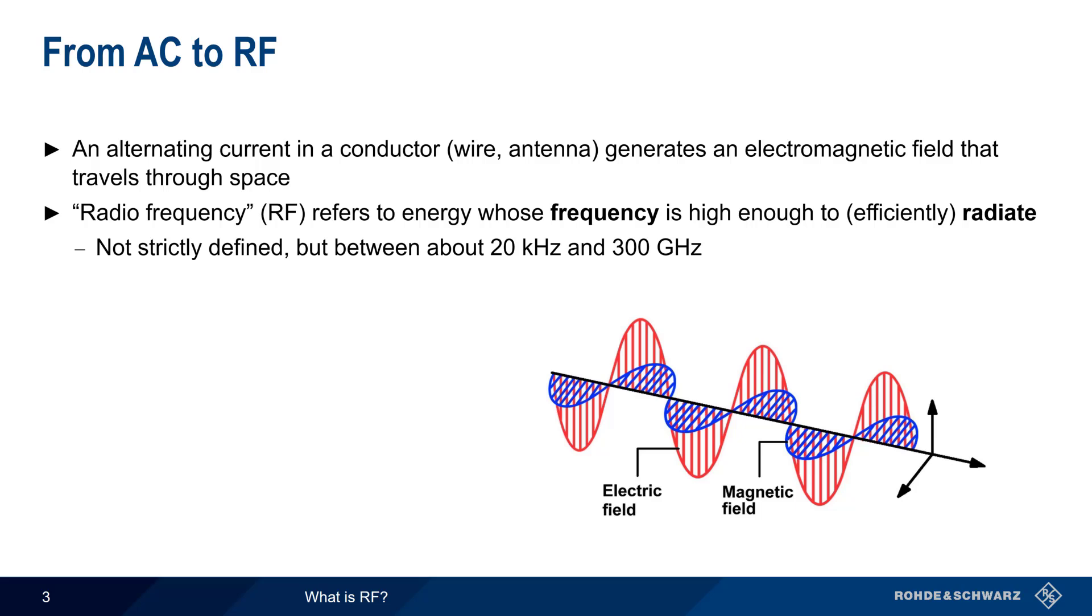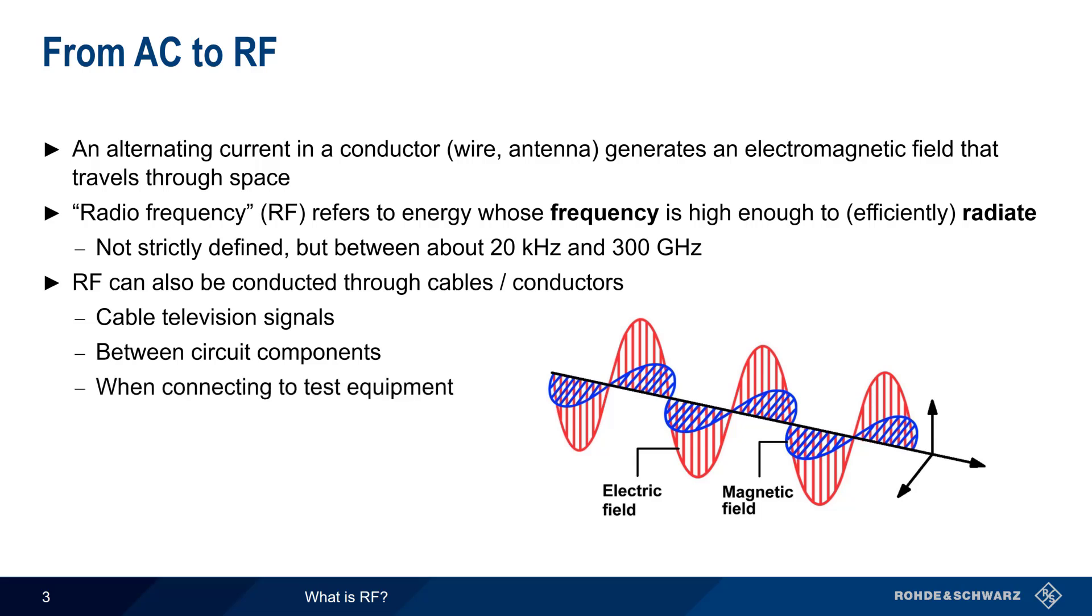Although the most important aspect of RF is the fact that it can propagate through space, RF can also be carried by cables or other conductors. A common example of this is cable television signals sent within coaxial or coax cables. RF is also conducted between components in electronic devices, such as within a cell phone or a GPS receiver. And most radio frequency test and measurement applications have traditionally used conducted RF.